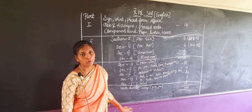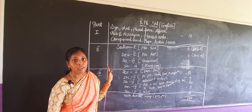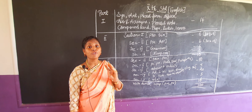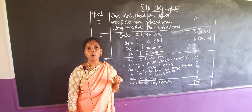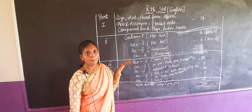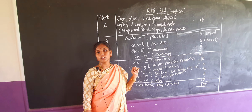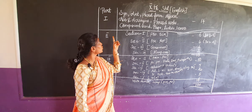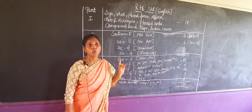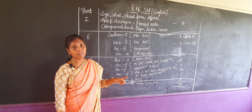In this English question paper, we are having four parts: Part 1, Part 2, Part 3, and Part 4. According to Part 1, the first topic is synonyms and antonyms — questions 1, 2, 3 for synonyms and 4, 5, 6 for antonyms they are asking.